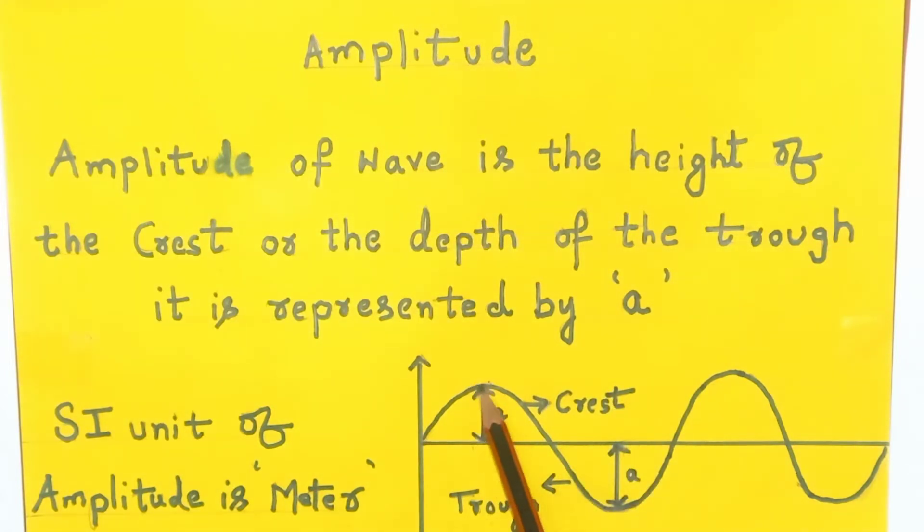So, the maximum height of the crest from the mean position is considered to be amplitude. As well as the maximum depth of the trough from the mean position is considered to be amplitude.